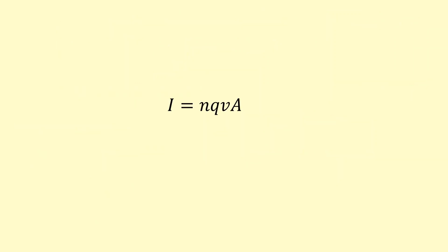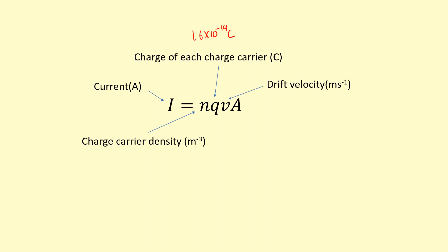So basically, in the last question, I derived this equation here. I said that the current is going to equal the charge carrier density, which is the number of electrons per unit volume, times the charge of each charge carrier, which is, in this case, the electron, so it's going to be 1.6 times 10 to the power of minus 19. But it doesn't have to be this, depends on what's carrying the charge, times the drift velocity in meters per second, times the cross-section area in meters squared.